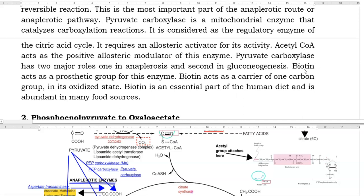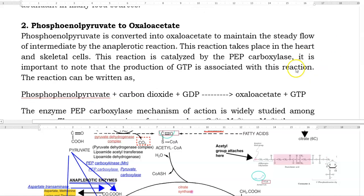Pyruvate carboxylase has two major roles. One in anaplerosis process and second one in gluconeogenesis. Biotin is the prosthetic group or co-factor or co-enzyme of this enzyme. Biotin acts as a carrier of one carbon group in its oxidized state. And biotin is an essential part of the human diet and it is abundant in many food sources.